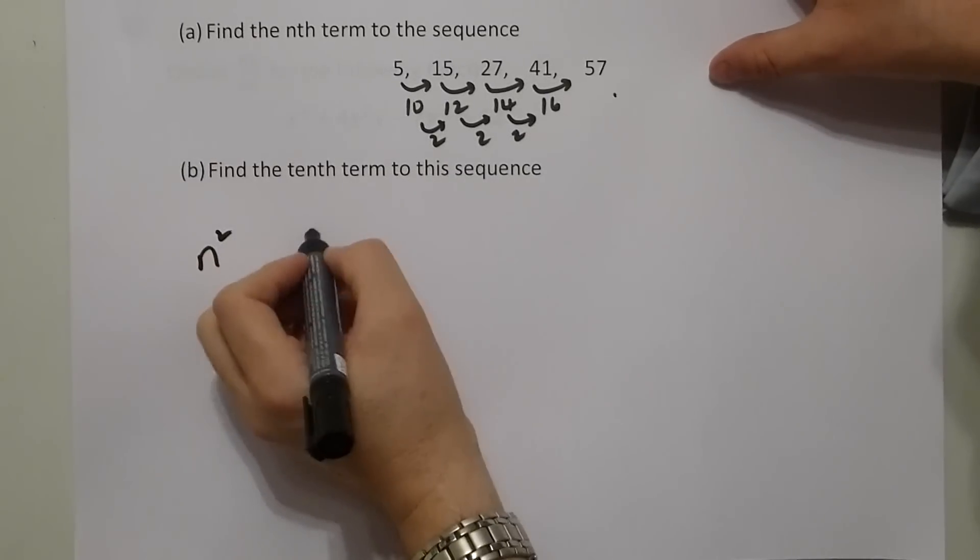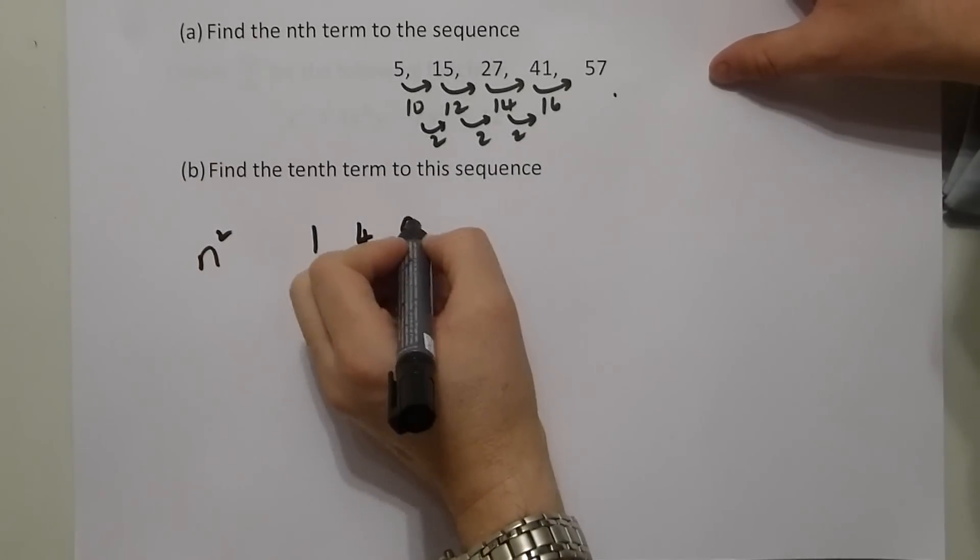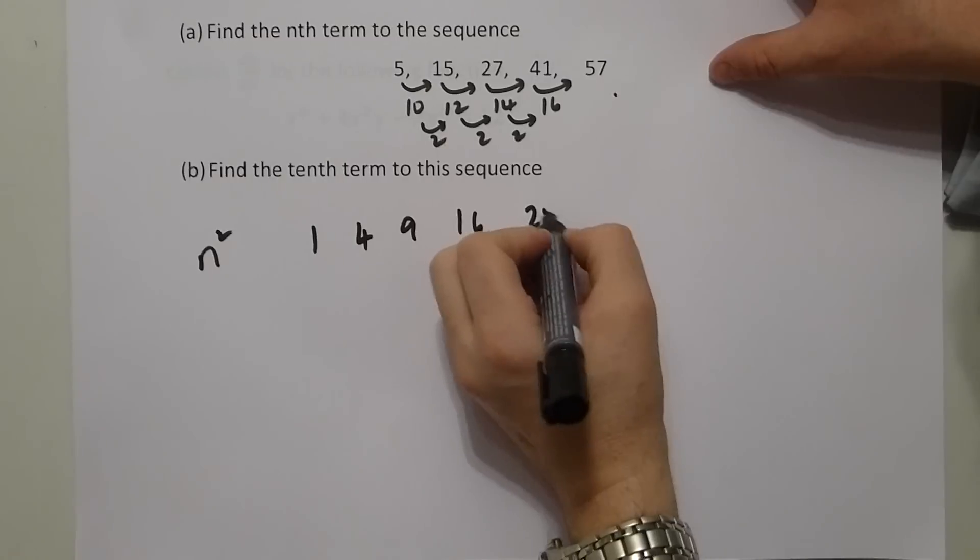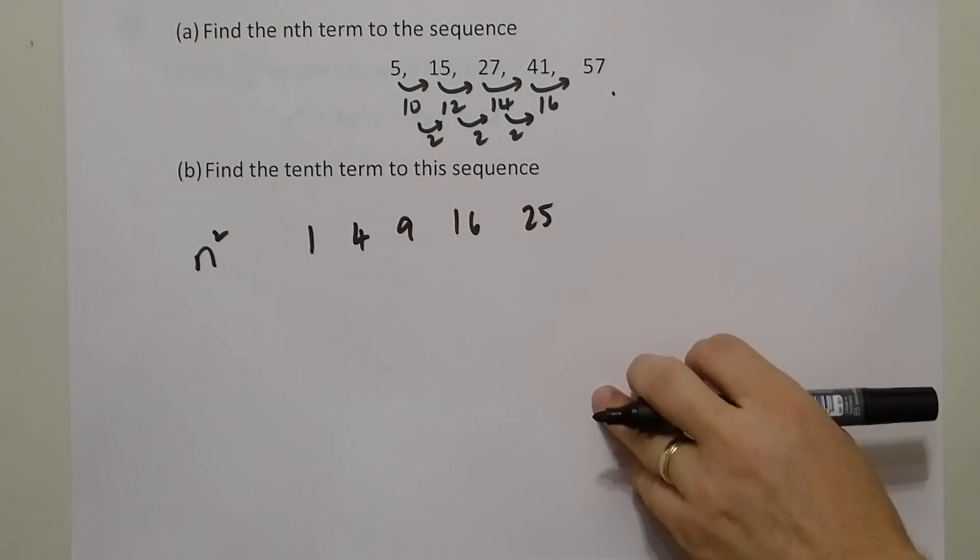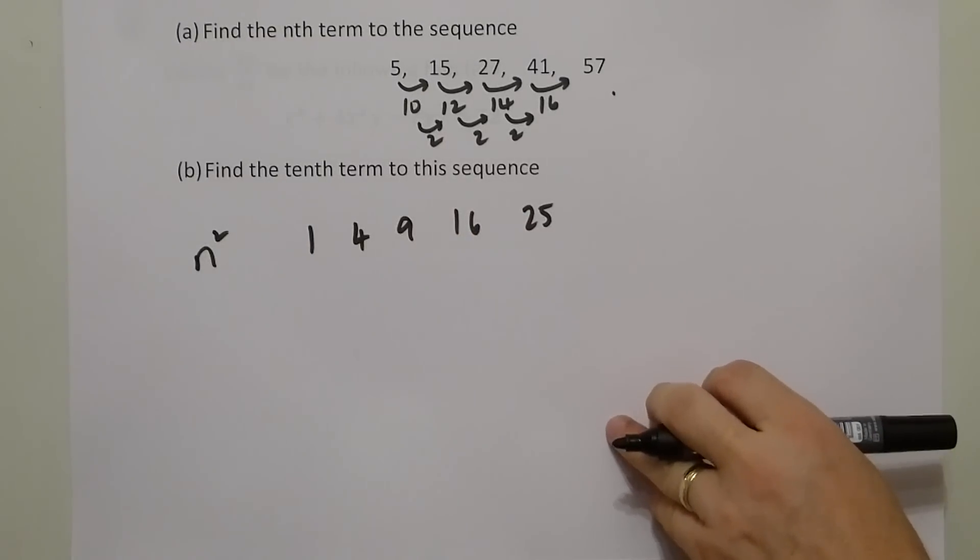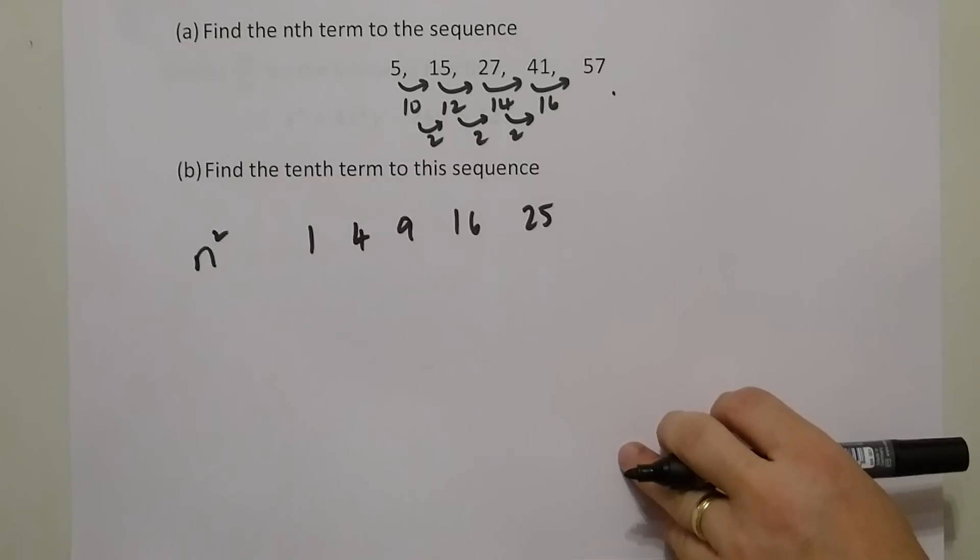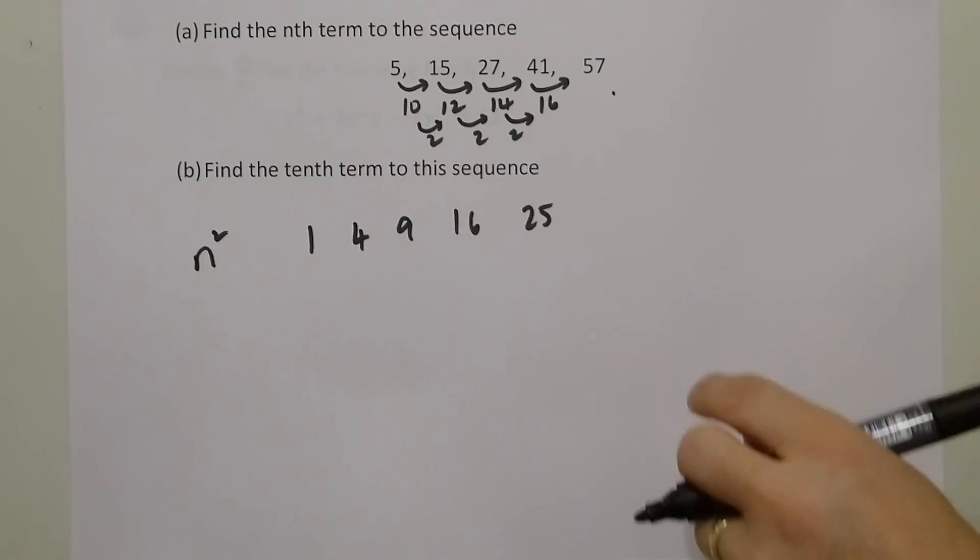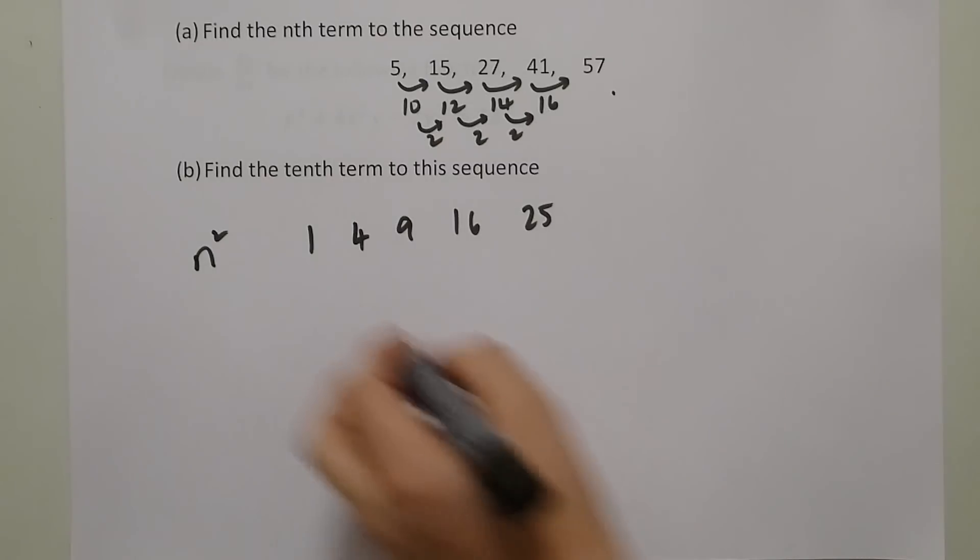Now, n squared has the sequence 1, 4, 9, 16, and 25. And clearly, if we look at the difference of that from the original sequence, we can see that we have a difference of 4.